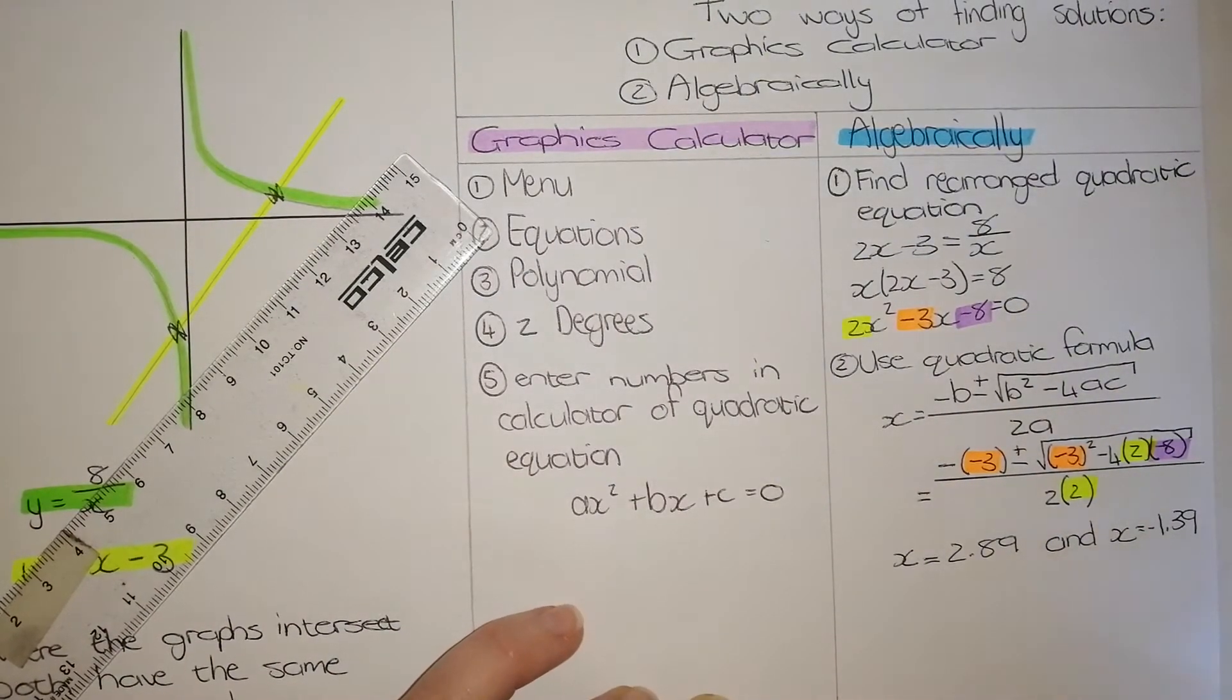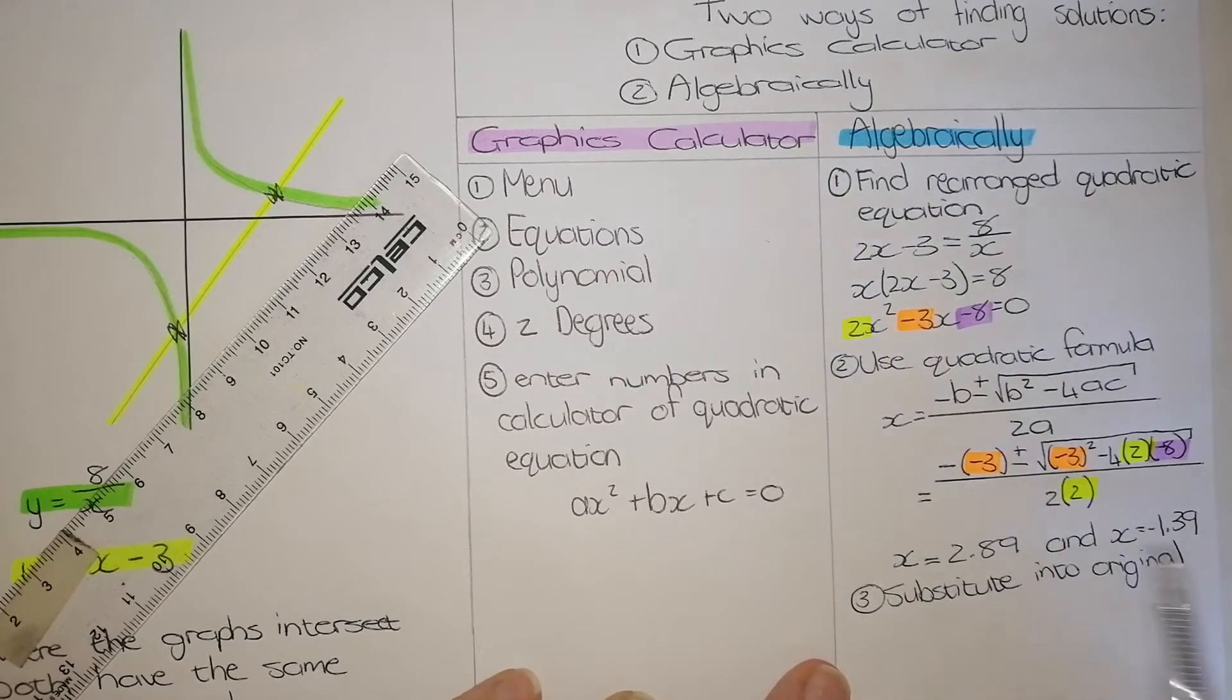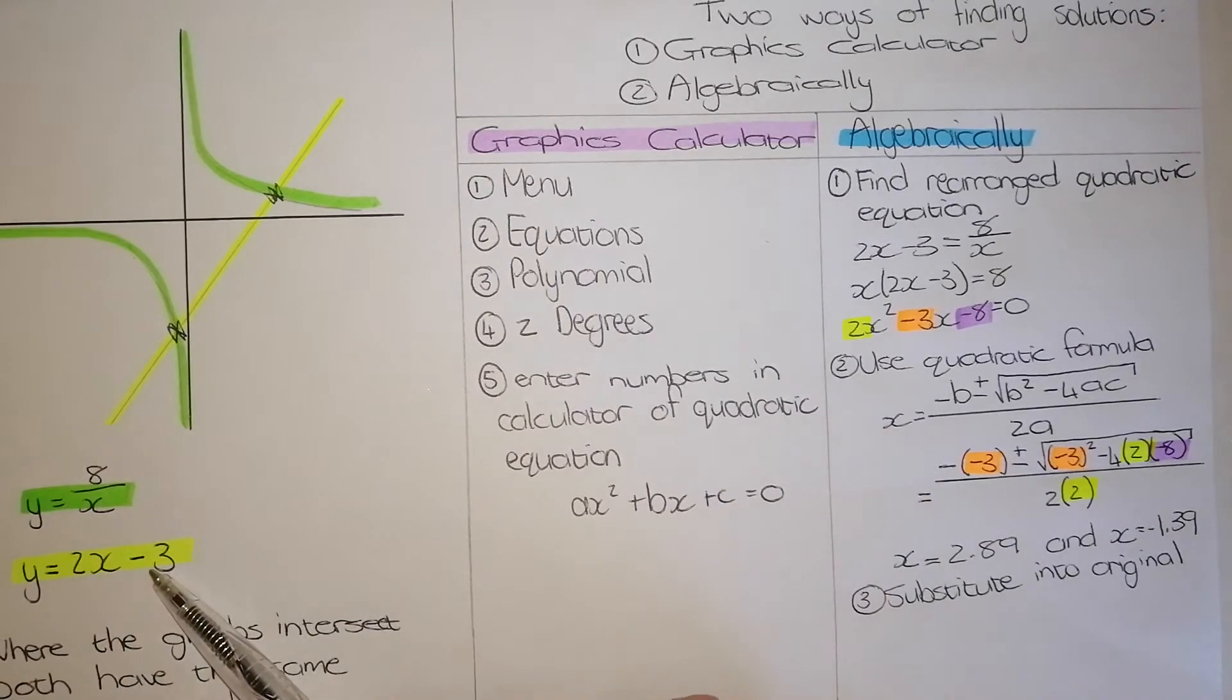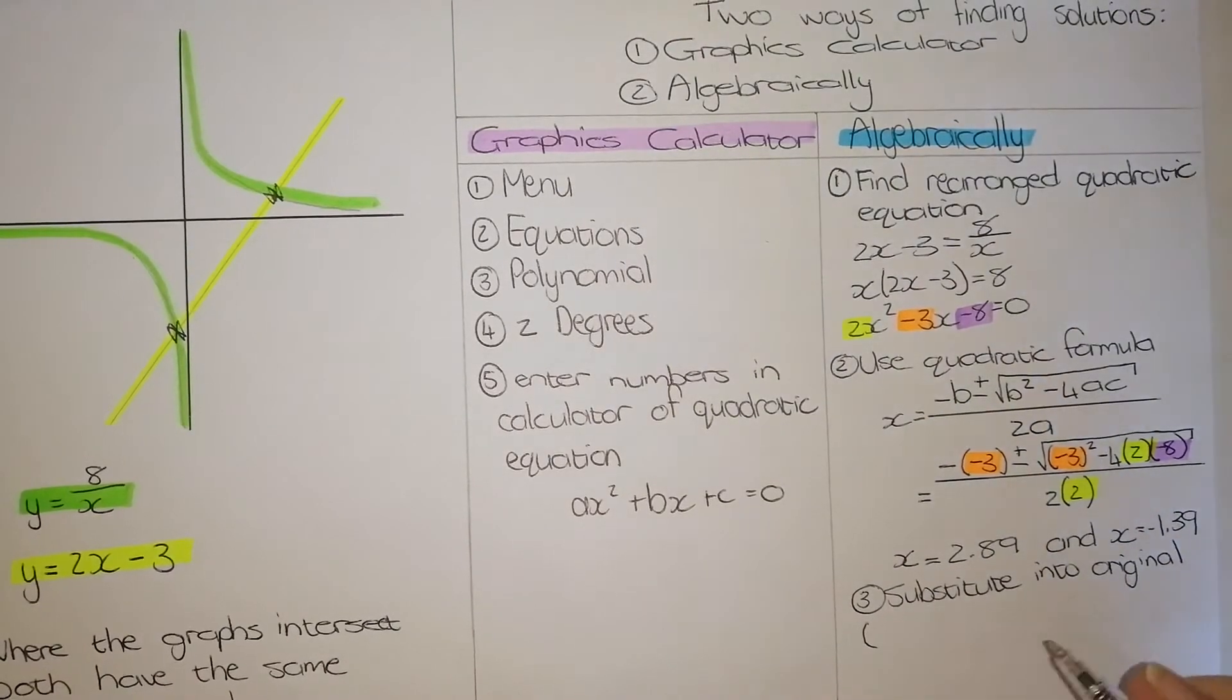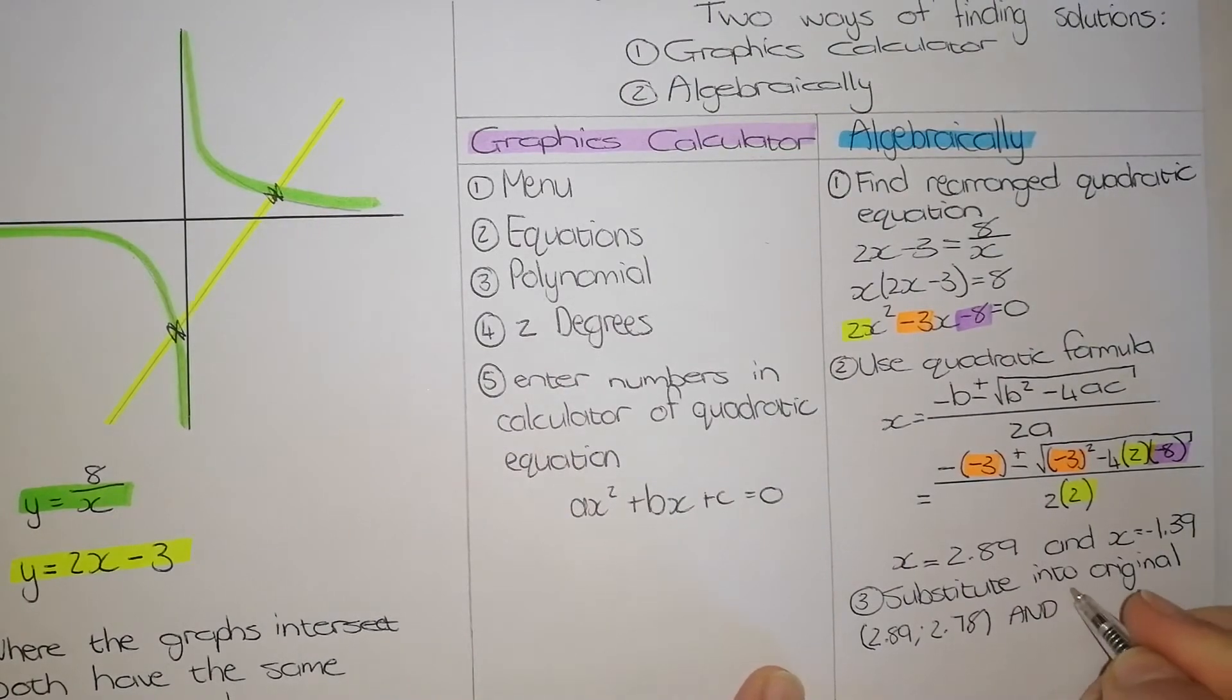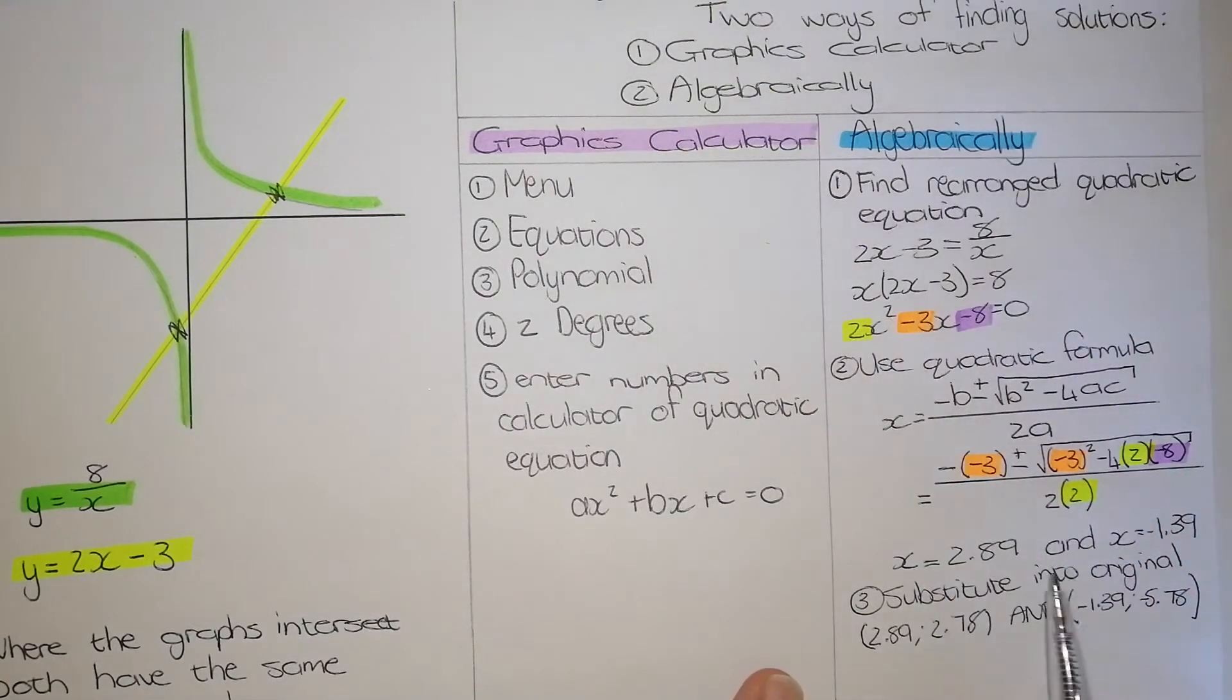Now for me to find the y values of these coordinates, I need to do step number three. And step number three is, I need to substitute these two x values into my original equations. You can decide if you want to substitute it into the hyperbola equation or the straight line. What I normally do is substitute it into the straight line because it's easier and there's less chance of making an error. So when you have done your 2.89, remember I'm asking for the point of intersection, therefore my answer has to be written as a coordinate. This one will be 2.89, the x value with a y value of 2.78. And my second coordinate, with an x value of negative 1.39, my y value will be negative 5.78. This is how we find the points of intersection algebraically.